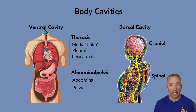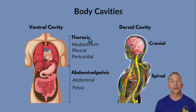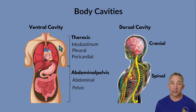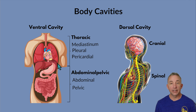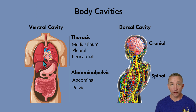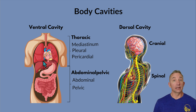When we get into the ventral cavity, we can divide it into the thoracic cavity and the abdominal-pelvic cavity, and then we can further break down the thoracic. With my entire chest, the division between thoracic and abdominal-pelvic — you can't see it on this picture — but that would be the diaphragm. The diaphragm is a muscle that we use for inhalation.